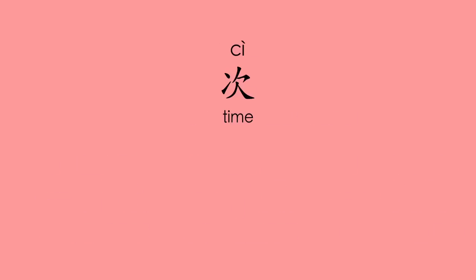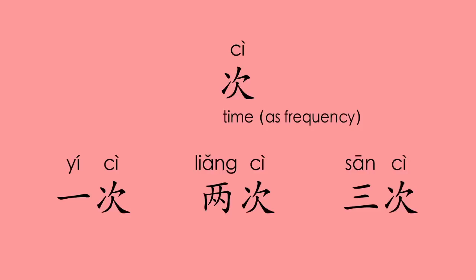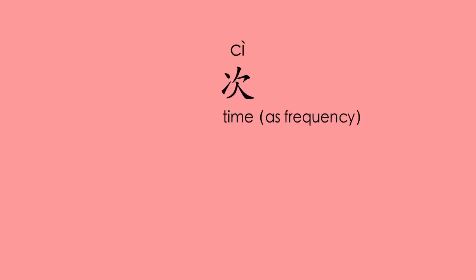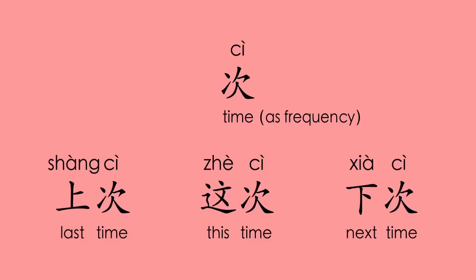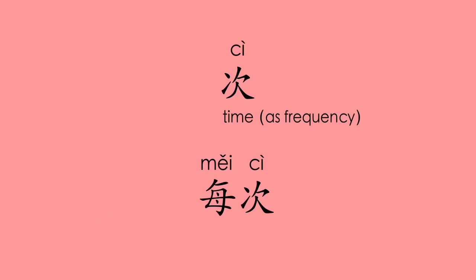次 — time as frequency. 一次 (once), 两次 (twice), 三次 (three times). 上次 (last time), 这次 (this time), 下次 (next time). 每次 (every time).